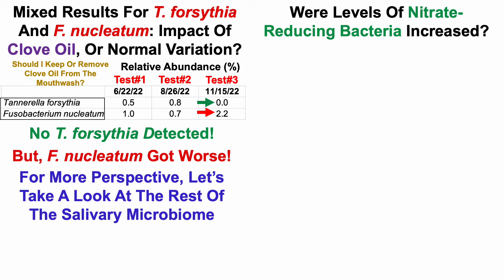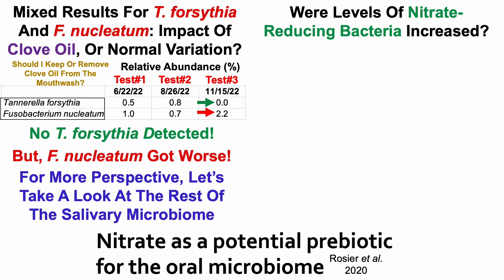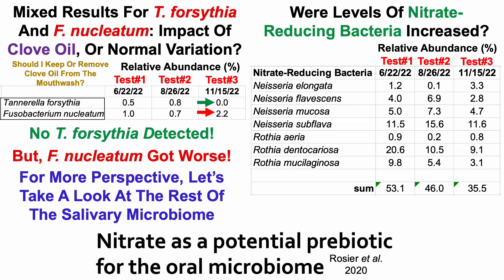First, were levels of nitrate-reducing bacteria increased? The reason I ask is because nitrate has been shown, at least in an in vitro study, to act as a potential prebiotic for the oral microbiome — not just increasing levels of nitrate-consuming bacteria, but also reducing levels of potentially pathogenic salivary bacteria. In my samples, nitrate-reducing bacteria belong to two main genera: Neisseria and Rothia. For test number one, without any nitrate in the mouthwash, these bacteria were about 53% of my salivary microbiome. For test number two, I added four grams per liter of potassium nitrate, but unexpectedly, levels went down to 46%.